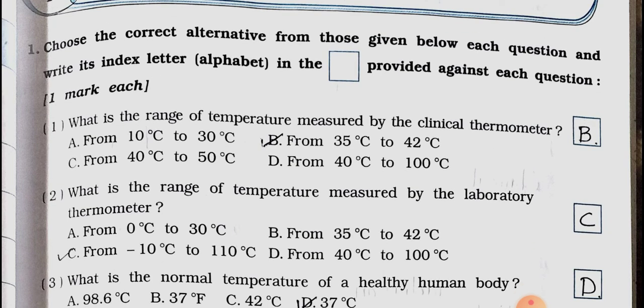Each question carries one mark. Number 1: What is the range of temperature measured by the clinical thermometer? A. From 10 degree to 30 degree Celsius, B. From 35 degree Celsius to 42 degree Celsius, C. From 40 degree Celsius to 50 degree Celsius, D. From 40 degree Celsius to 100 degree Celsius. Answer is option B, from 35 degree Celsius to 42 degree Celsius.